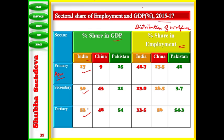When we compare it with the workforce, the secondary sector which gives 30 percent contribution to GDP has 33 percent of the workforce in it, while the tertiary sector, which contributes the maximum — 53 percent — to GDP, also has significant workforce engagement.